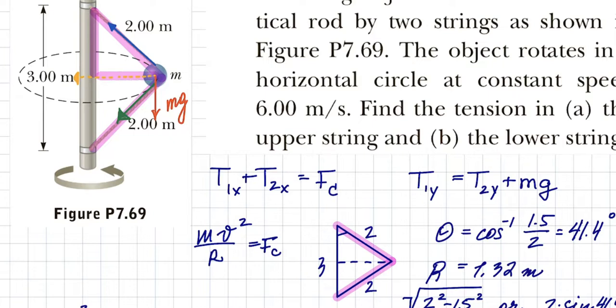So the thing is, because both of these are two meters, and they both will be making the same angle with the vertical—